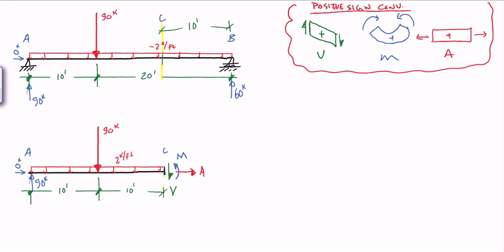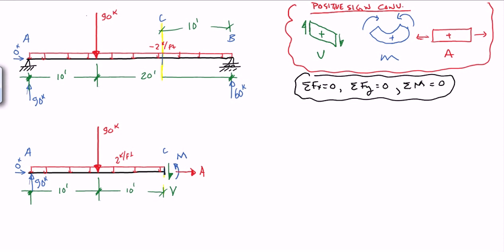These are our three unknowns. From our three equations of equilibrium — sum of forces in x equals zero, sum of forces in y equals zero, and sum of moments about all points equals zero — we're going to solve for our three unknowns: unknown moment, unknown axial, and unknown shear. At this point, it's no different than any of the reaction problems we've already done.